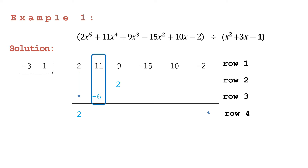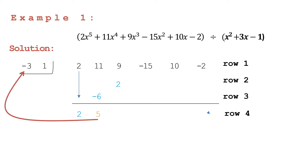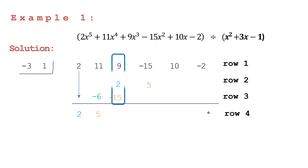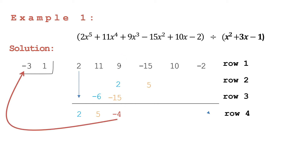Then add the next column: 11 plus negative 6 is equal to positive 5. Repeat the process: 5 times negative 3 is equal to negative 15; write negative 15 in row three, third column. 5 times 1 is equal to 5; write positive 5 in row two, fourth column. Then add the third column: 9 plus 2 is equal to 11.